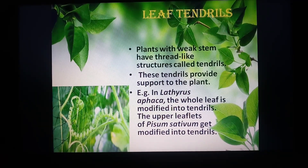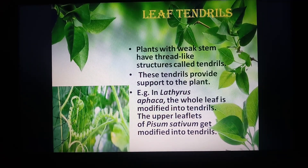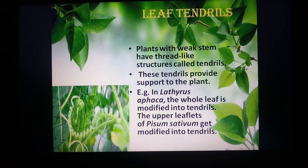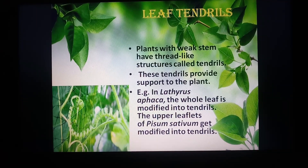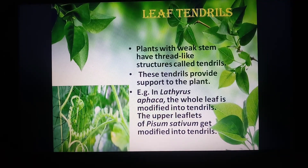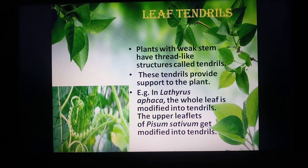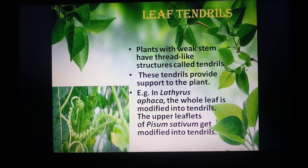Leaf tendrils. In the case of tendrils, some plants have very weak stems, and for support so that the plant can grow easily by climbing on certain fixed substrates, the plant has modified thin wire-like long coiled structures which are known as tendrils. These tendrils coil around a structure and help the plant to grow. Different parts of the plant can be modified into leaf tendrils, like the stipule, the petiole, the leaf tip, or the entire leaf. Example is pea.